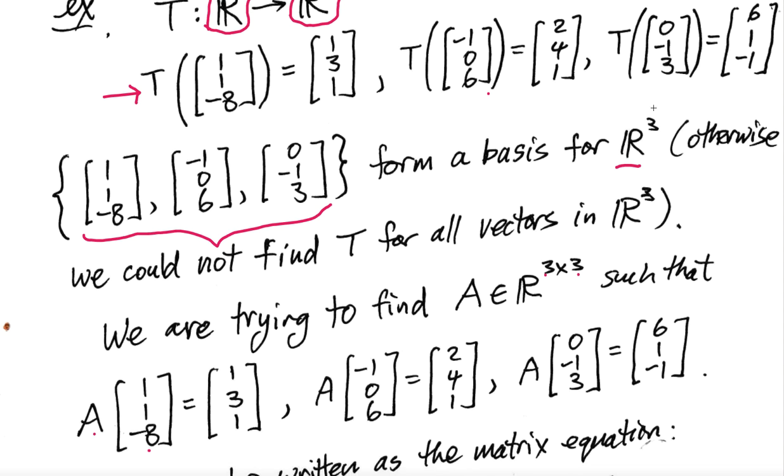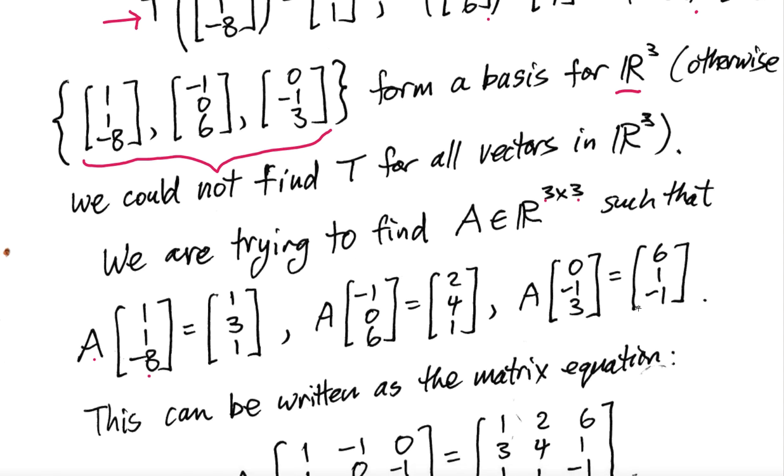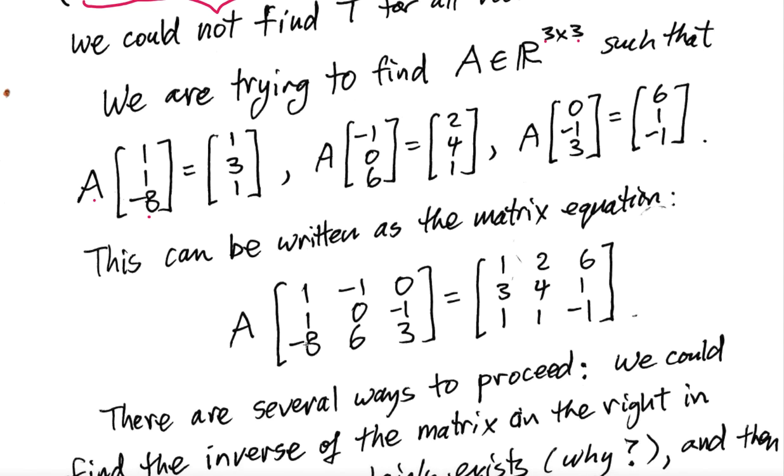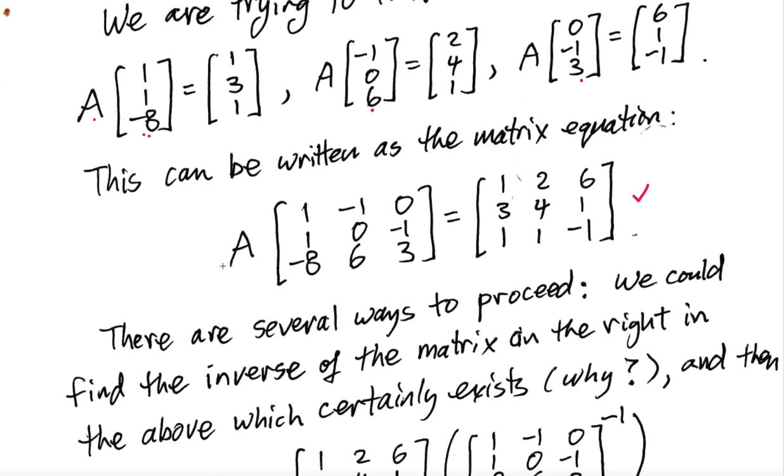And then, likewise, I've restated these two statements in terms of A also. So A times (-1, 0, 6) should be (2, 4, 1). A times (0, -1, 3) should be (6, 1, -1). Now, this could be written as a matrix equation, you see. So I just took the columns for the independent variable, columns from the domain, if you wish, and packed them into a single matrix, and then what? The resulting values (1, 3, 1), (2, 4, 1), (6, 1, -1), and put those into a matrix also, and we've got ourselves a matrix equation here. And you're trying to solve for A.